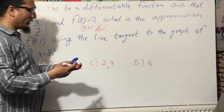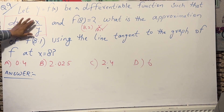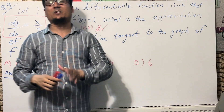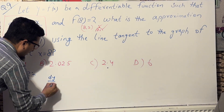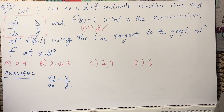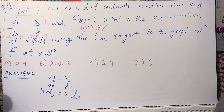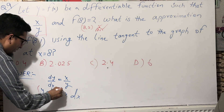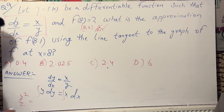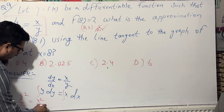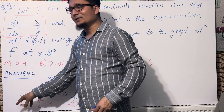So first, we solve the differential equation dy/dx = x/y. With the help of this differential equation we can find the function. We rewrite it as y dy = x dx, then integrate both sides. After integration, we get: y²/2 = x²/2 + C, where C is the constant of integration.